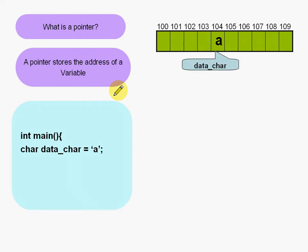And that represents data_char. So a character is just one byte, and that's what is stored in the hundred and fourth byte. Now let us declare a pointer.